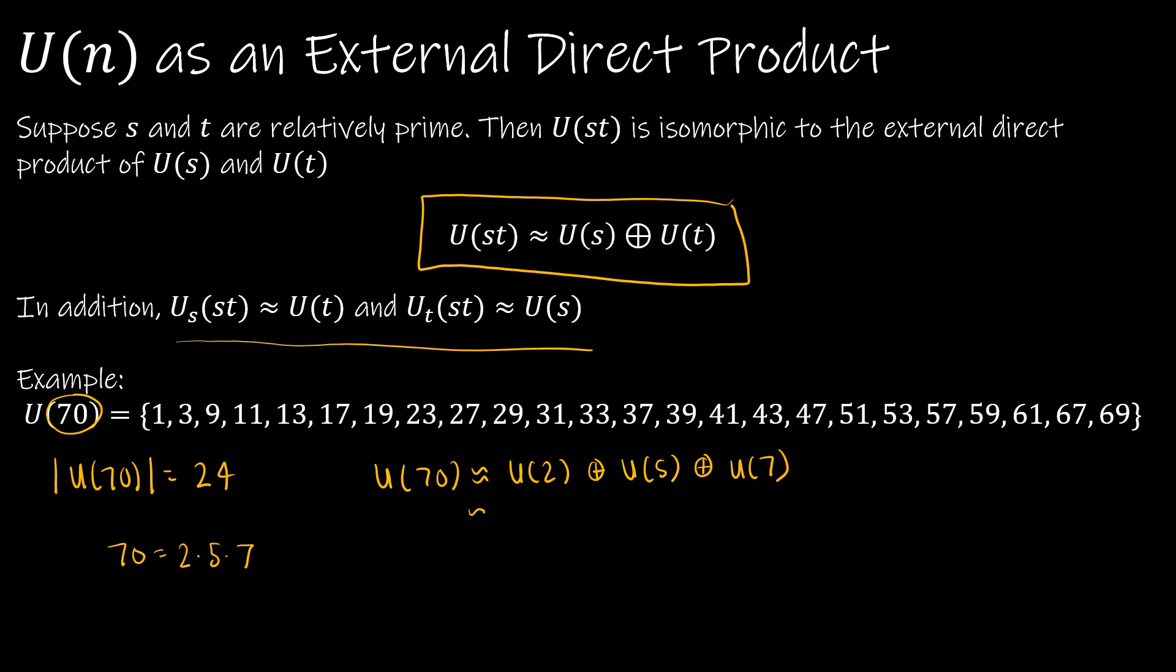What's sort of interesting here is U(2) can actually be isomorphic to Z_1 because that would be the only element of the identity. U(5) is actually isomorphic to Z_4. Again, elements 1, 2, 3, and 4. And U(7) is isomorphic to Z_6. So when I'm writing this, because this is a trivial group, I can actually say that this is isomorphic to the external direct product of Z_4 and Z_6. And again, that would make sense because I've already told you there's 24 elements. This has 4 elements, this has 6 elements. Therefore, this would also have 24 elements.